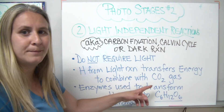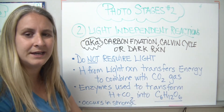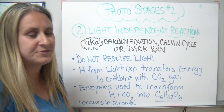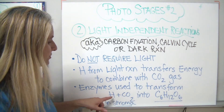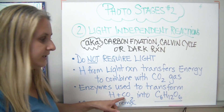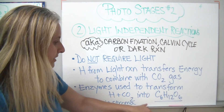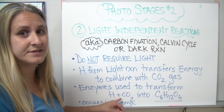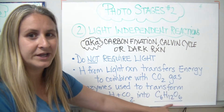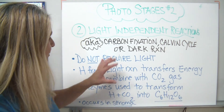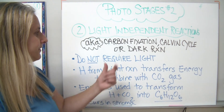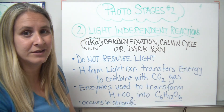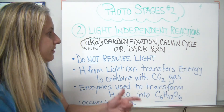NADPH2 is going to transfer those hydrogens over to this step because we're going to need them. We're going to combine them with carbon dioxide gas — where do you think that comes from? During this phase, enzymes are used to transform hydrogen and carbon dioxide into that familiar chemical formula: C6H12O6, glucose. You can see we have the raw materials — H's, C's, and O's — and if we can combine them in the right quantities, we can make sugars. This reaction is called carbon fixation because we're fixing the carbon into glucose, which we can use later on.